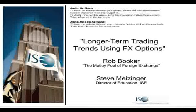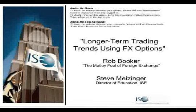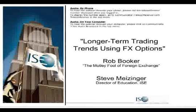I'm Meisinger, your host with the IAC webinar series. Each and every week at the IAC, we bring in special guests. Today, I'm really pleased to have Rob Booker with us. Rob is the Motley Fool of Foreign Exchange. He was with us a couple of times last year in 2008. He correctly called the U.S. dollar bottoming out, being extremely oversold. Today, he'll be talking about longer-term trading trends using IAC FX options.